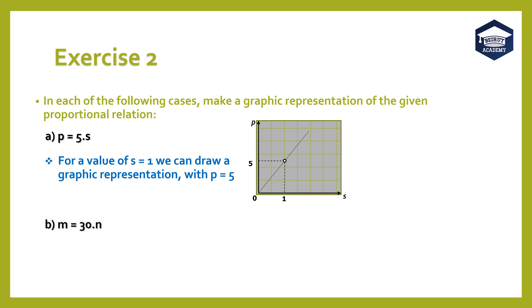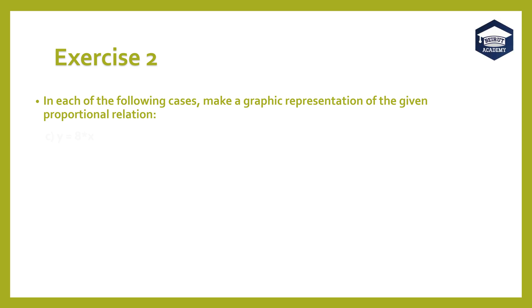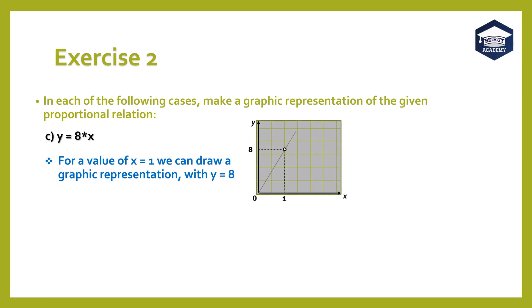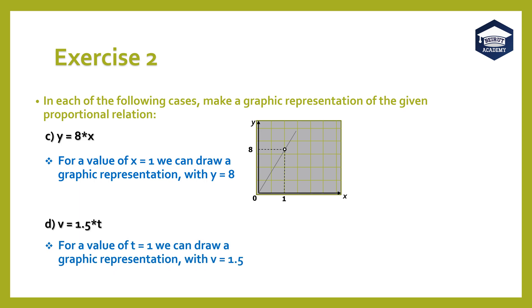Part B: m equals 30 times n. For a value of n equals 1, we can draw a graphic representation with m equals 30. Part C: y equals 8x. For a value of x equals 1, we can draw a graphic representation with y equals 8. Part D: v equals 1.5t. For a value of t equals 1, we can draw a graphic representation with v equals 1.5.